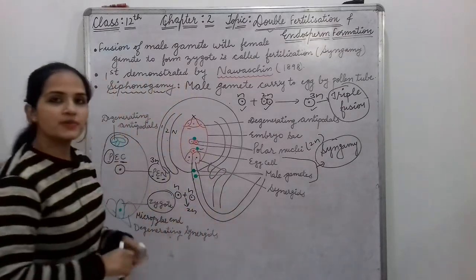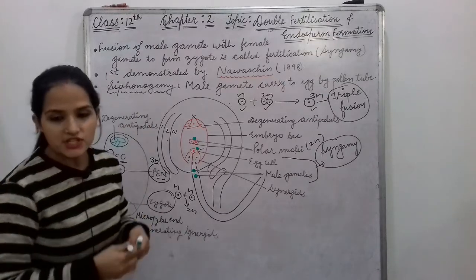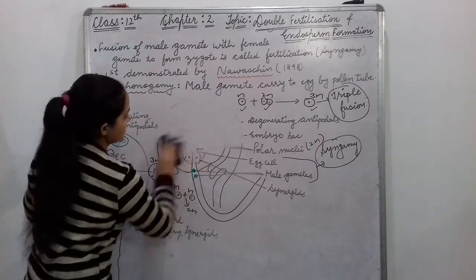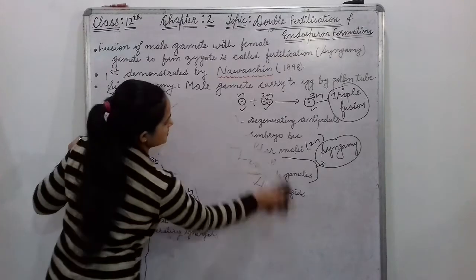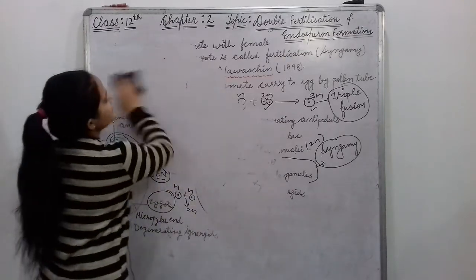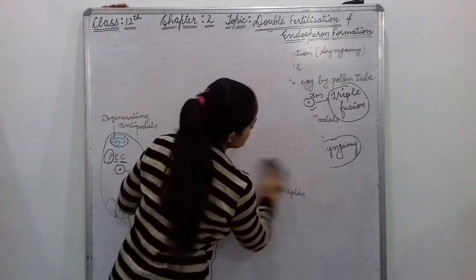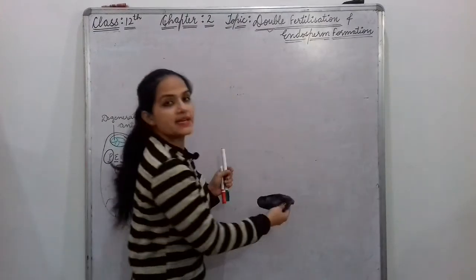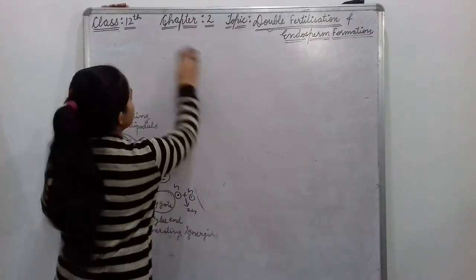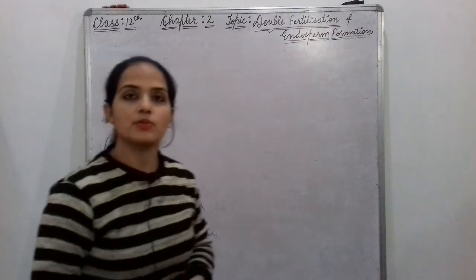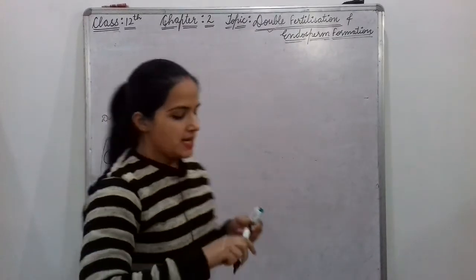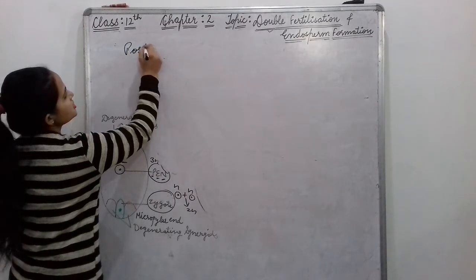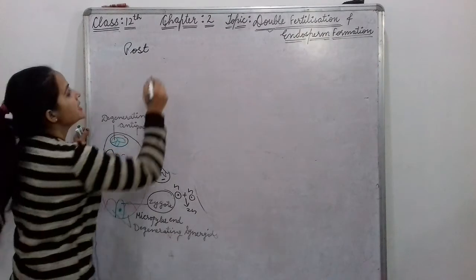Is it clear to everybody? So this was the topic of double fertilization. After that we will start endosperm formation. This diagram will be of use in our next topic. Then after double fertilization, what happens? Endosperm is formed. Before embryo formation — we know that the zygote eventually becomes an embryo — but before that, endosperm formation takes place. These are the post-fertilization events.